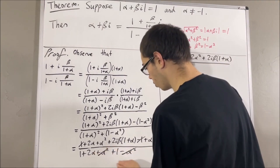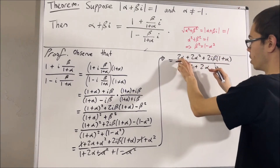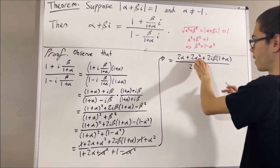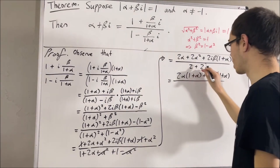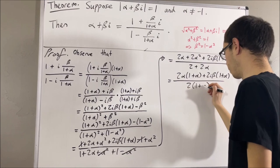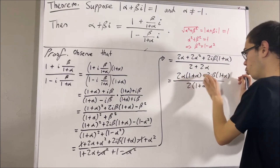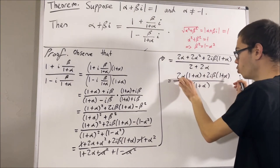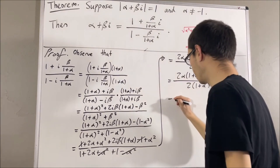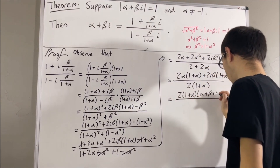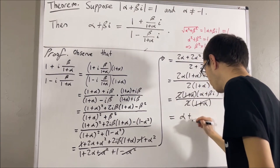But, in the denominator, we see that we have 2 plus 2 alpha. So, now, in the numerator, let's factor out from the first two terms. As you can see, from the first two terms, we can factor out 2 alpha. And, we get this. But, then, in the denominator, we can factor out a 2. So, we're left with this. And, now, in the numerator, we overall have two terms, and we can factor out 2 times 1 plus alpha from both of these terms. And, if we do that, we're going to get this. So, now, we see that the 2 times 1 plus alpha cancels out, and we're left with alpha plus beta i.